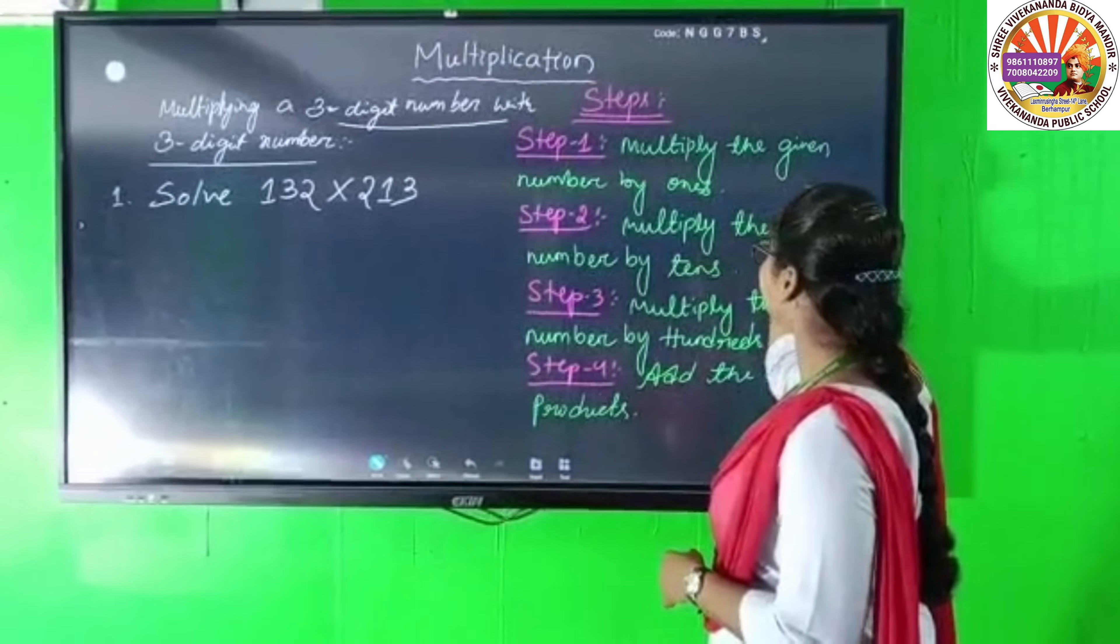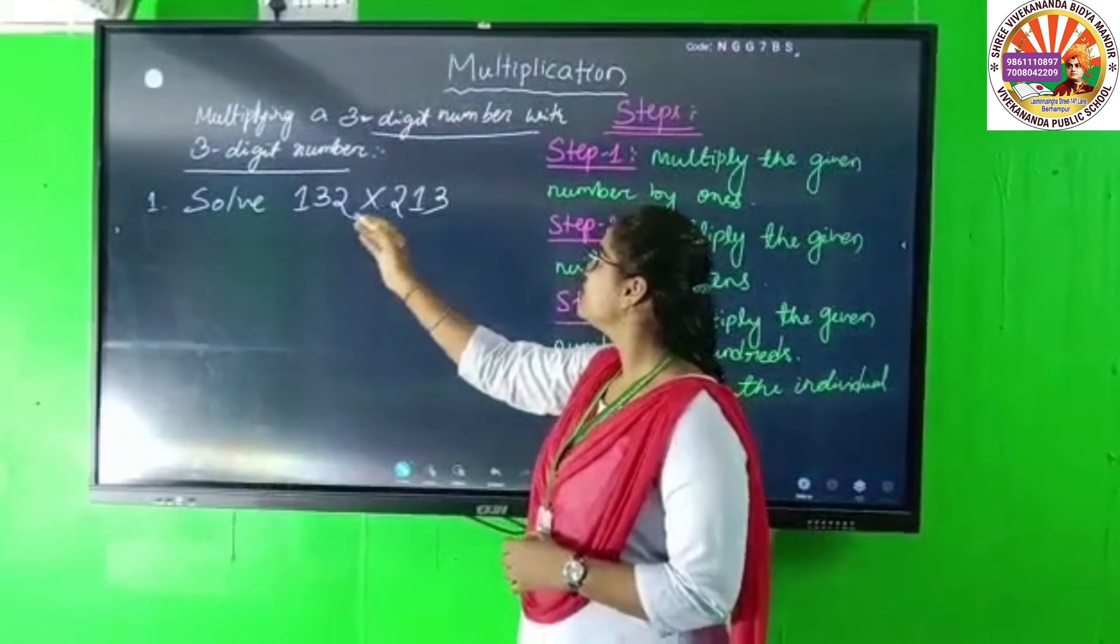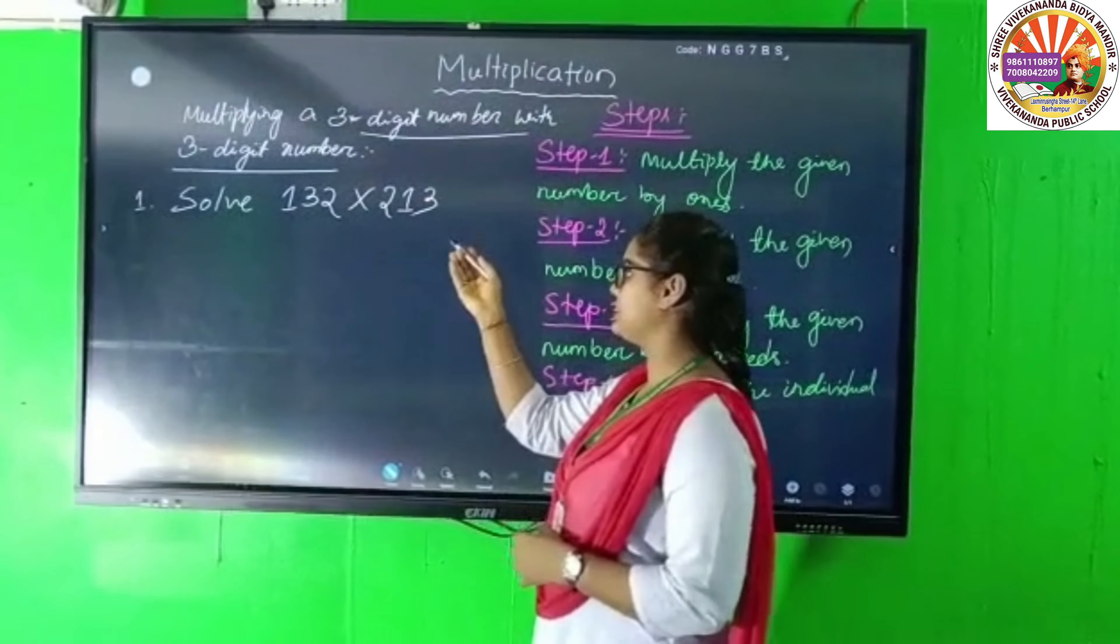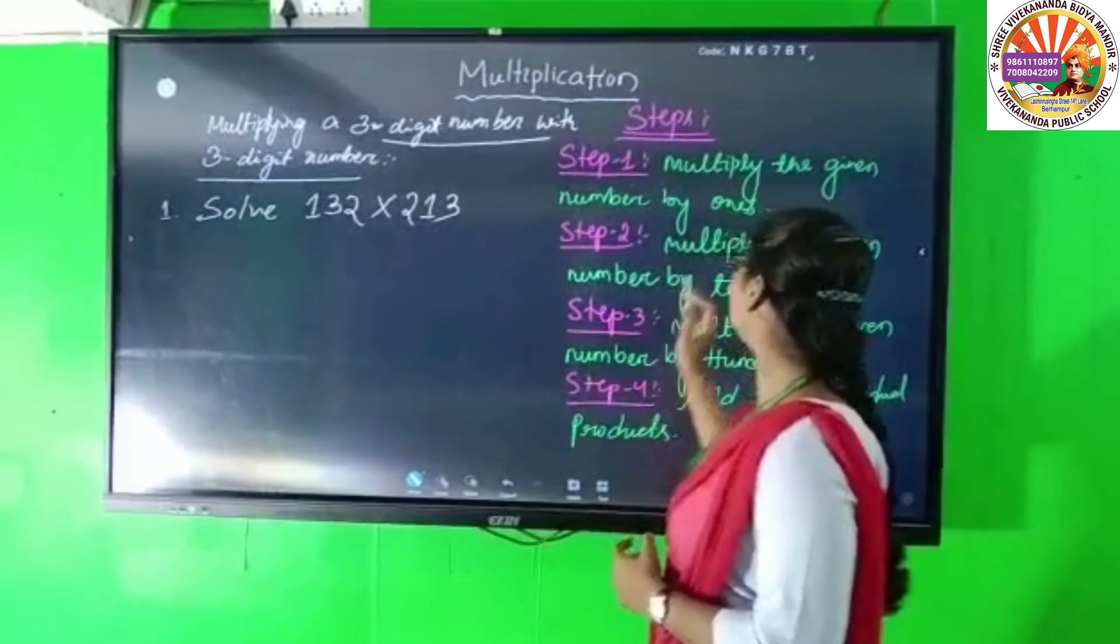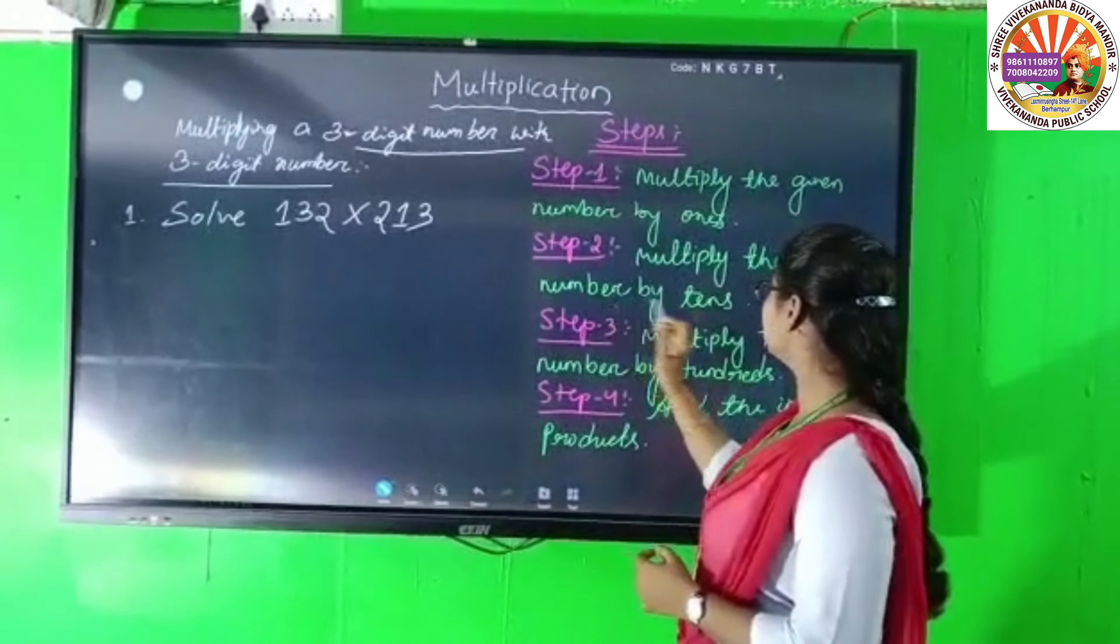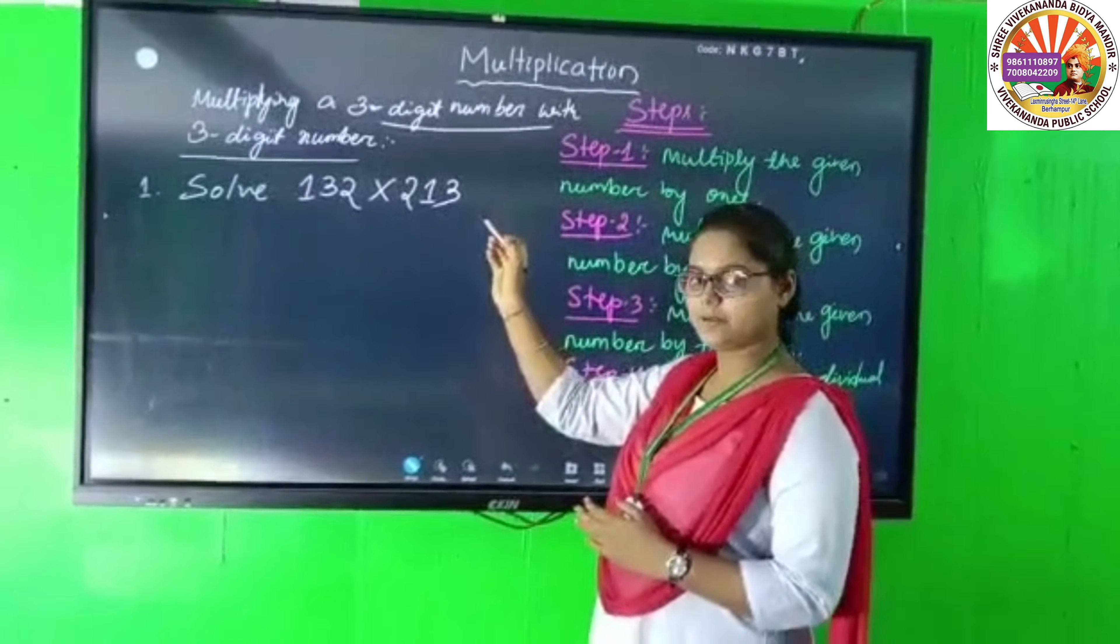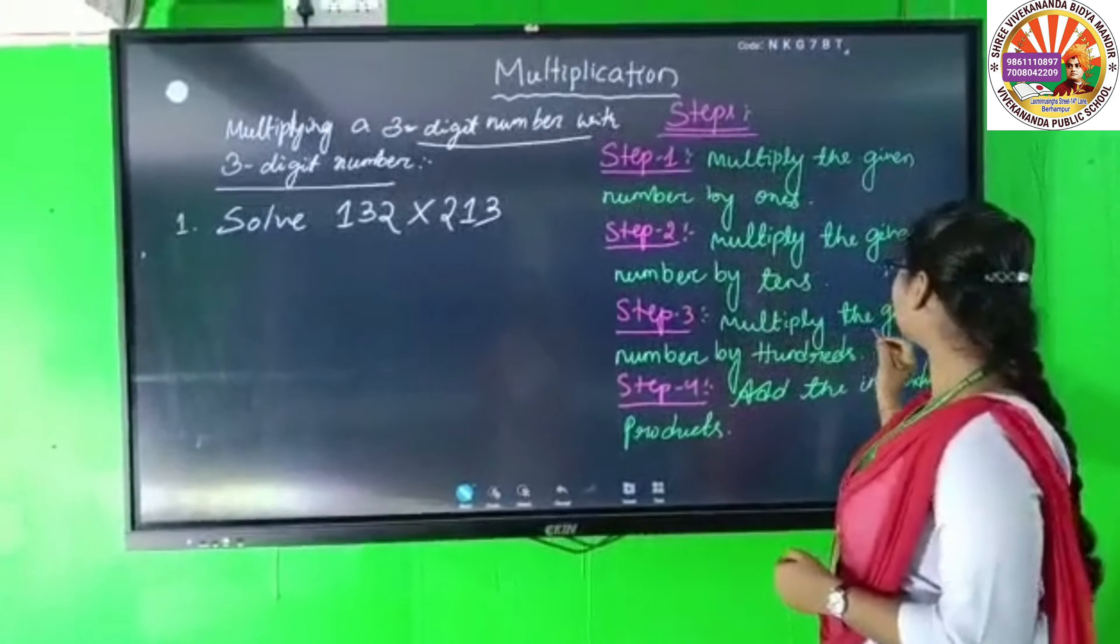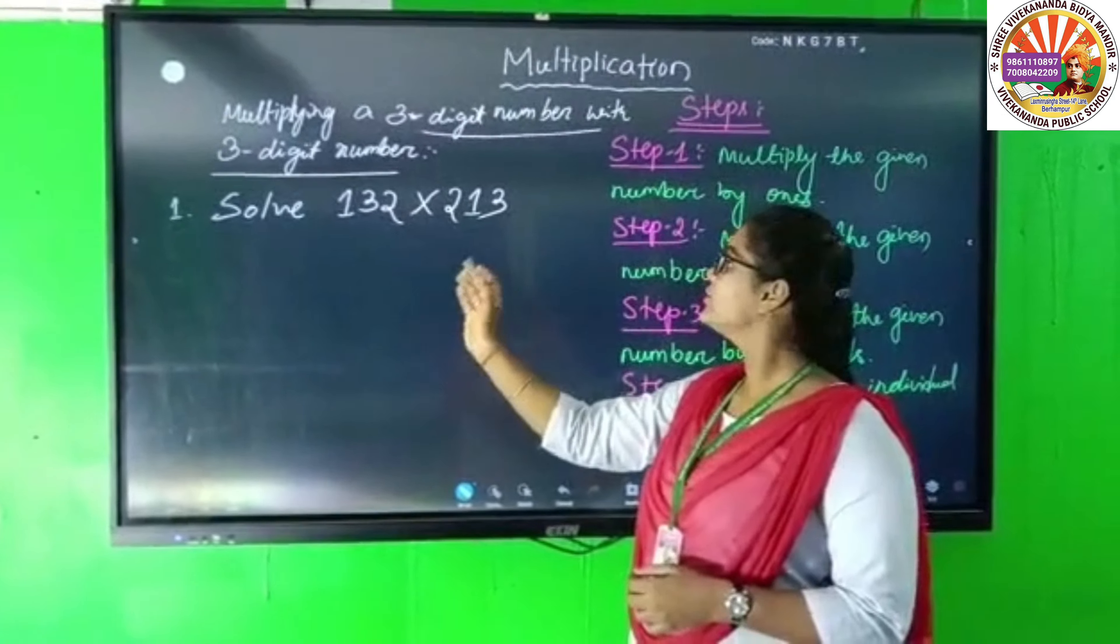Multiply the given number by ones. Whatever number is in the ones place, you multiply by ones. Then multiply the given number by tens. If you multiply the given number by tens, then multiply the given number by hundreds.